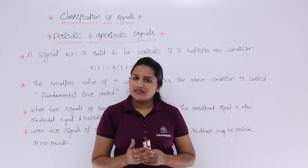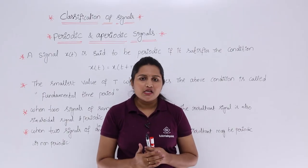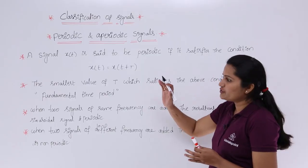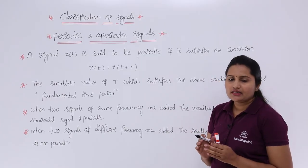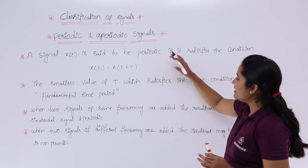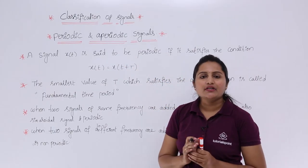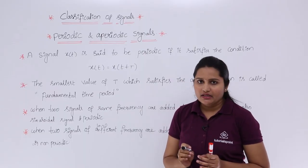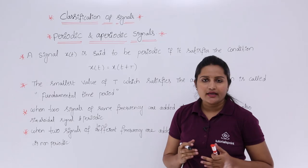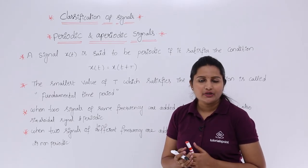A periodic signal is a signal which repeats at regular intervals of time. A signal x(t) is said to be periodic if it satisfies the condition x(t) = x(t + T). The signal needs to repeat again and again at a regular interval of time, and then that signal is said to be periodic.